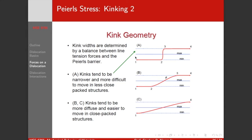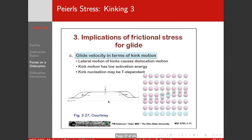The kink widths are a balance between the line tension of the dislocation, which we'll talk about in just a minute, and the Peierls barrier. But what's important to remember now is kinks tend to be narrower and more difficult to move in less close-packed structures. In close-packed structures, they tend to be more diffuse and much easier to move.